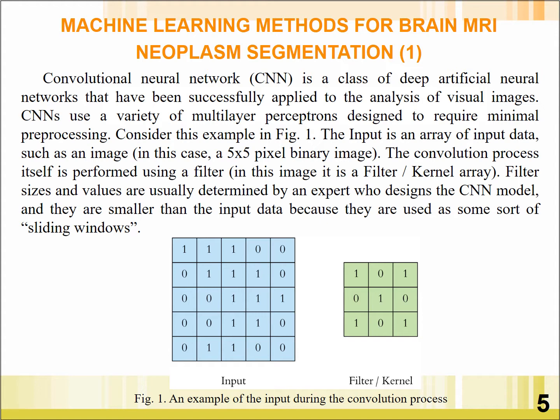Consider the example in Figure 1. The input is an area of input data, such as an image. The convolutional process itself is performed using a filter — for example, a kernel array. Filter sizes and values are usually determined by an expert who designed the CNN model, and they are smaller than the input data because they are used as a sort of sliding window.